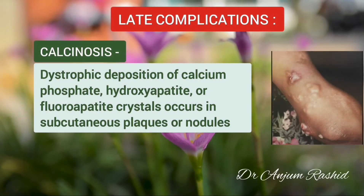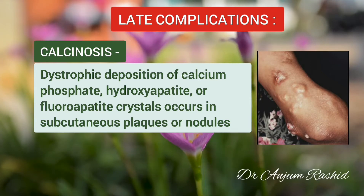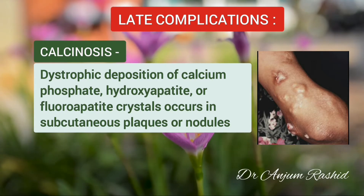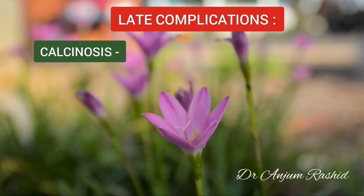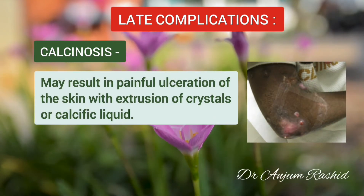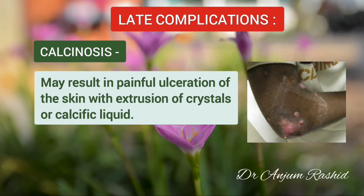The late complications of juvenile dermatomyositis include calcinosis. There is dystrophic deposition of calcium phosphate, hydroxyapatite, or fluoroapatite crystals, resulting in formation of subcutaneous plaques or nodules. This may result in painful ulceration of the skin with extrusion of the crystals or calcified liquid.